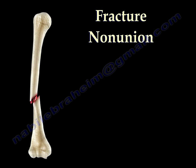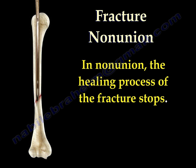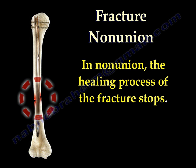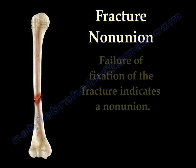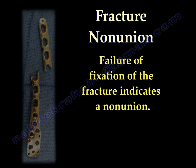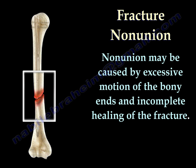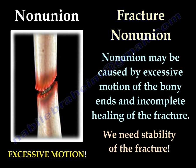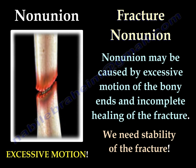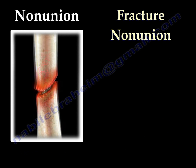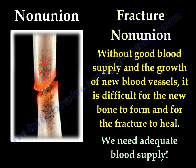Fracture Non-Union: Causes and Treatment. In non-union, the healing process of the fracture stops. Failure of fixation of the fracture indicates a non-union. Non-union may be caused by excessive motion of the bony ends and incomplete healing of the fracture. We need stability for this fracture — excessive motion is bad. We also need vascularity and adequate blood supply for the fracture to heal. Without good blood supply and the growth of new blood vessels, it is difficult for the new bone to form and for the fracture to heal.